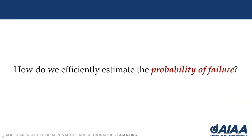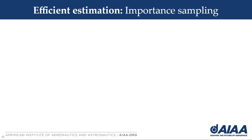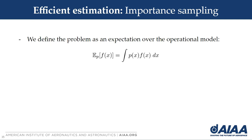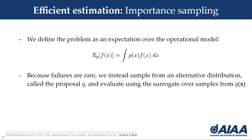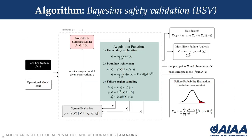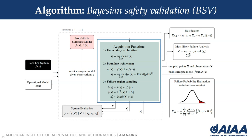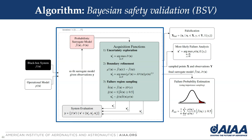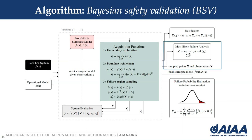The question is how do we efficiently estimate the probability of failure given this surrogate? We can use importance sampling. Our problem is defined as an expectation over the operational model p, but because failures may be rare, we instead sample from an alternative distribution q called the proposal, and evaluate using the surrogate over samples from q. We use a discrete distribution across the domain for q to simplify the problem, though future work could focus on selecting a better proposal. The proposed algorithm, called Bayesian Safety Validation or BSV, takes as input a black box function f and an operational model p, and using the failure search and refinement acquisition functions, acquires a set of three points and evaluates the true system to get observations. We refit the surrogate model and repeat this for t iterations, then return inputs that led to failures, the most likely failure, and a probability of failure estimate computed via importance sampling.